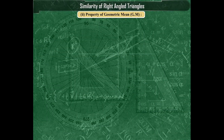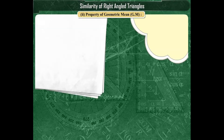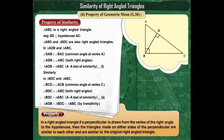The property of geometric mean. From the property of similarity in right-angled triangles we discussed before, we can deduce one more property. This property is known as the property of geometric mean.